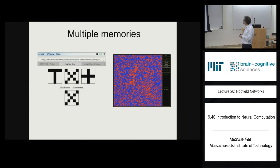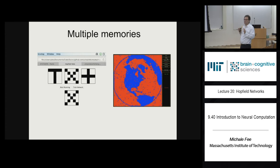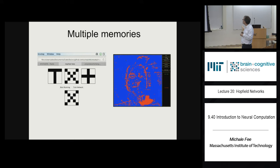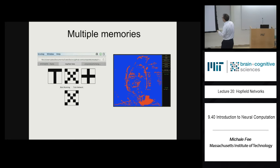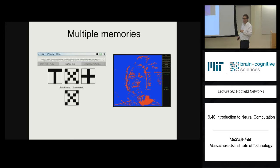This is demonstrated with a Hopfield network trained on three images: a face, a globe, and a penguin. Adding noise to an input and running the network usually recovers the correct stored pattern. But sometimes it recovers a spurious mixture — like a face with a penguin head — which is a spurious attractor arising when the network is loaded with too many memories and crosstalk between them causes the system to land in an unintended state.